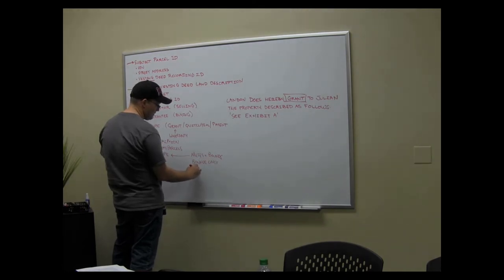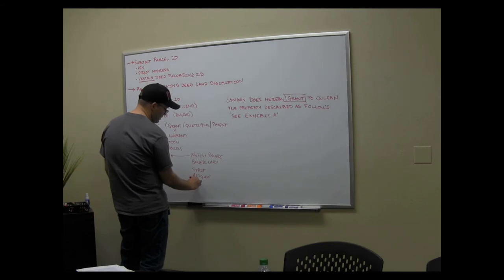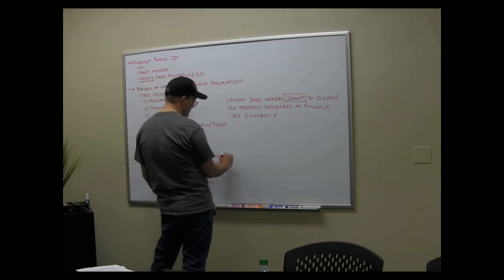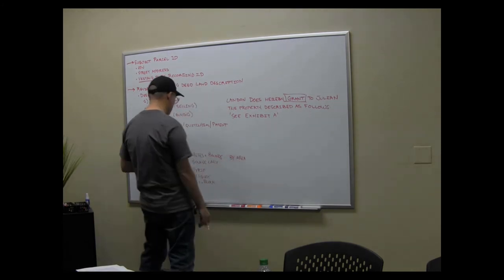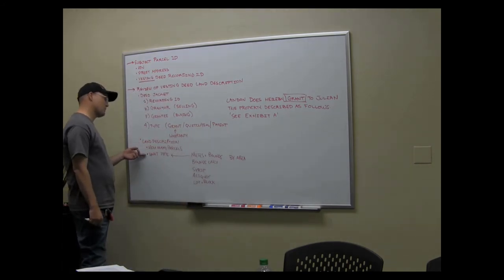There's strip descriptions. There's aliquot, that's public land, the north half of the section. There's lot and block, that's lot two of block five. There's lot and block, and there's what I call by area. So there's a few types. So you just let me know. There's one parcel with two exception parcels. Their description is metes and bounds.